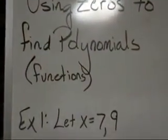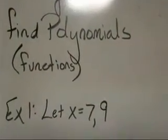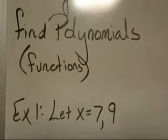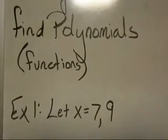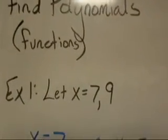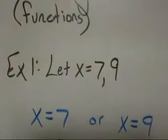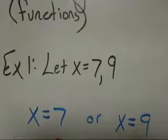Example 1. Let the zeros be 7 and 9, which we express as x equals 7 or 9. So start by writing two separate equations, x equals 7 or x equals 9.